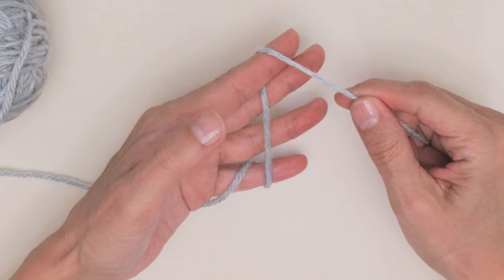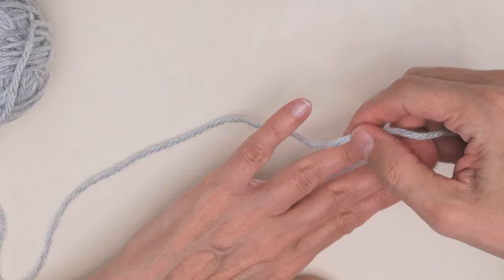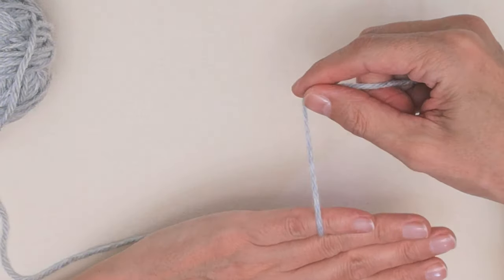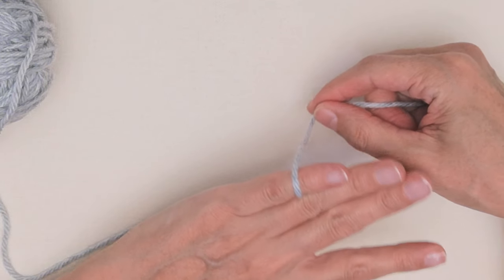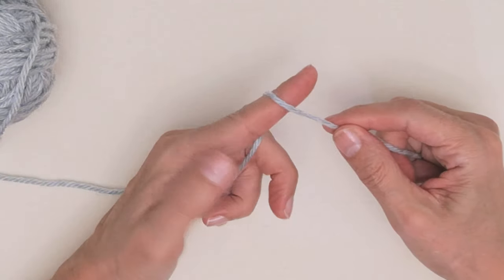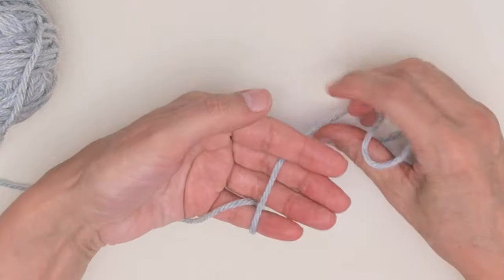Once again, place the yarn between your baby and ring finger, loop it around your baby finger, underneath your next two fingers, and over your pointer finger. As you can see...